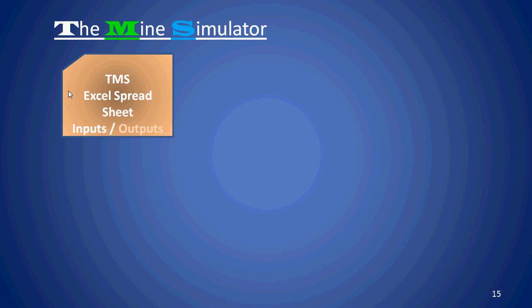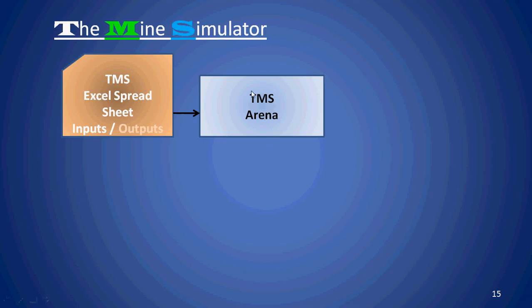You specify in the spreadsheet whether you're simulating a mine, a rail, a mine and rail, a mine and port, or just a port — whatever configuration it is — and you specify all the things about that particular operation. In a mining operation you define the whole road network, which fleet of trucks you're using, how you want to operate that fleet, your shift changes, crib breaks, weather, seasons, and all these other things about your operation. TMS, developed in ARENA, reads that information and then simulates what is in that spreadsheet.